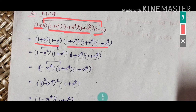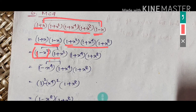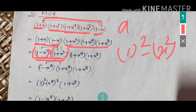Using a plus b times a minus b equals a squared minus b squared: a is 1 and b is x, so a squared minus b squared gives 1 squared minus x squared, which is 1 minus x squared. Now (1−x²) is multiplied by (1+x²), and applying the formula again with a=1 and b=x², we get 1 squared minus x squared squared, which is 1 minus x to the power four.